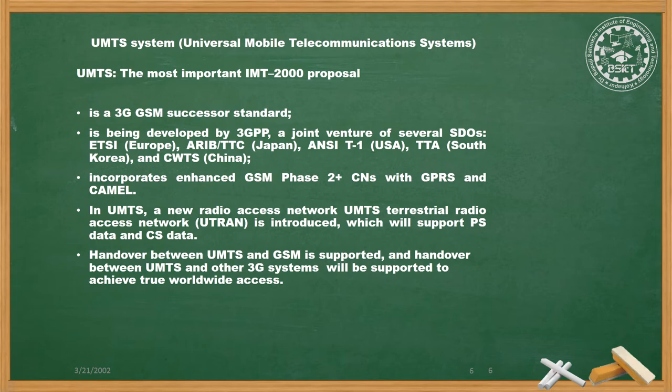UMTS is being developed by 3GPP, a joint venture of several Standards Development Organizations: ETSI from Europe, ARIB and TTC from Japan, ANSI T1 from the USA, TTA from South Korea, and CWTS from China. All these organizations are developing the UMTS standard.